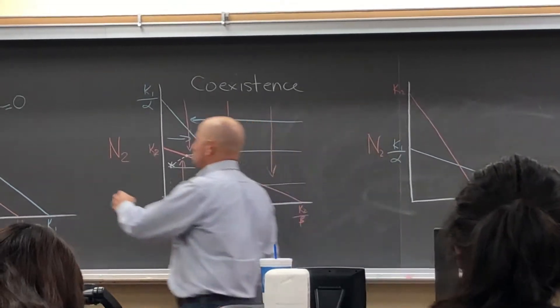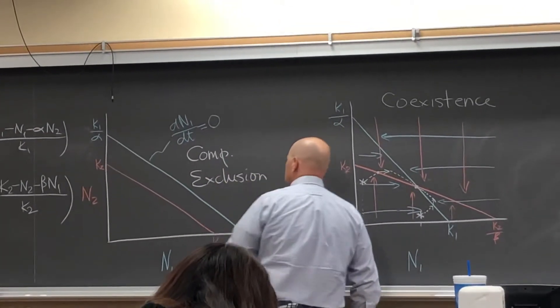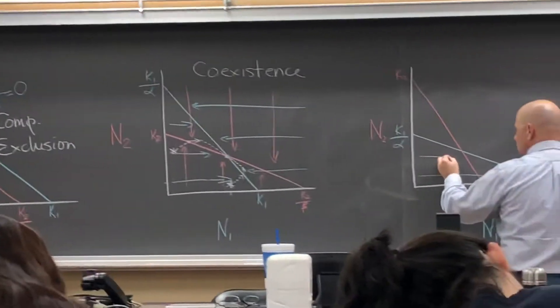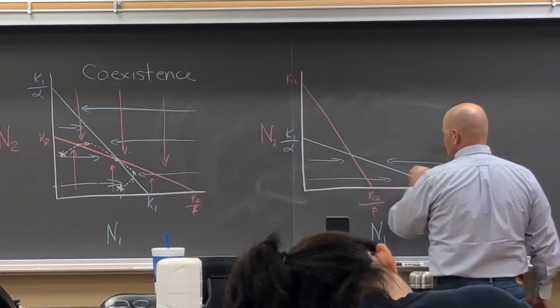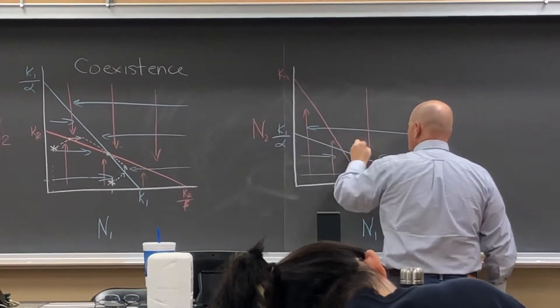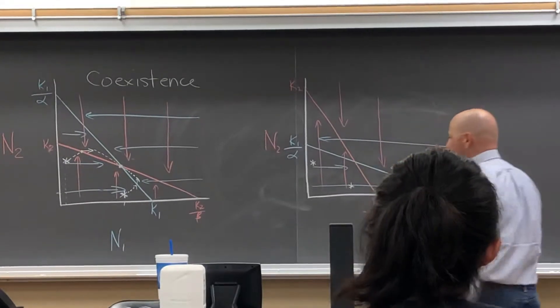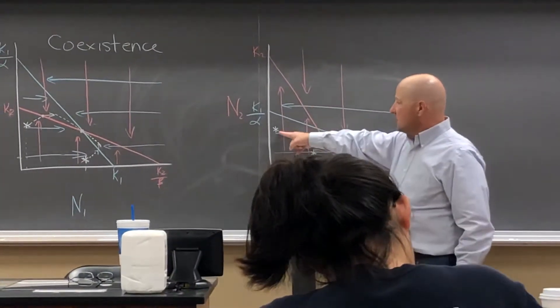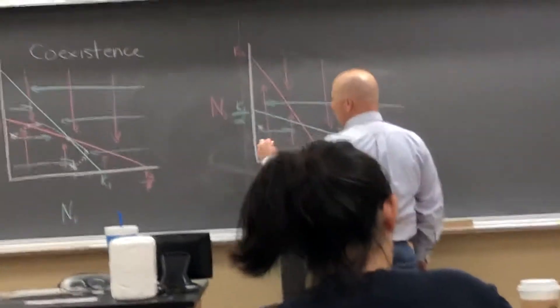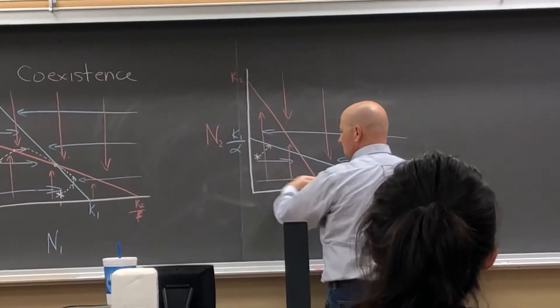All right, so this one, remember, was competitive exclusion. Okay, let's check out this. This one, we'll put our growth lines in there. So under the blue is growth for species 1. Above the blue is decline. Under the red is growth for species 2. And above the red is decline. Let's try the same strategy we did there. We'll just have two different starting places. All right, so we're sort of in the same scenario here, right? We're under both the red and blue lines. So both populations have the ability to grow.